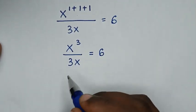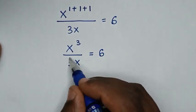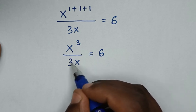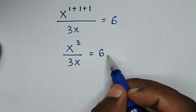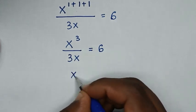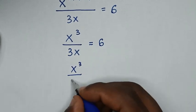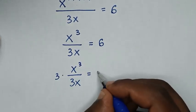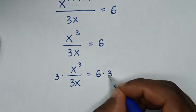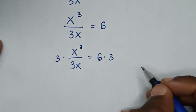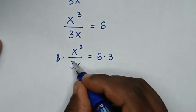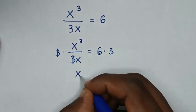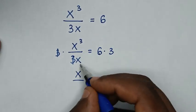Then from here, we will multiply by 3 to remove the denominator. We move the 3 from 3x and multiply by 3 on both sides. So it will be x power 3 over 3x, multiplied by 3 is equal to 6 times 3. The 3 will cancel the 3, so it will be x power 3 over x.